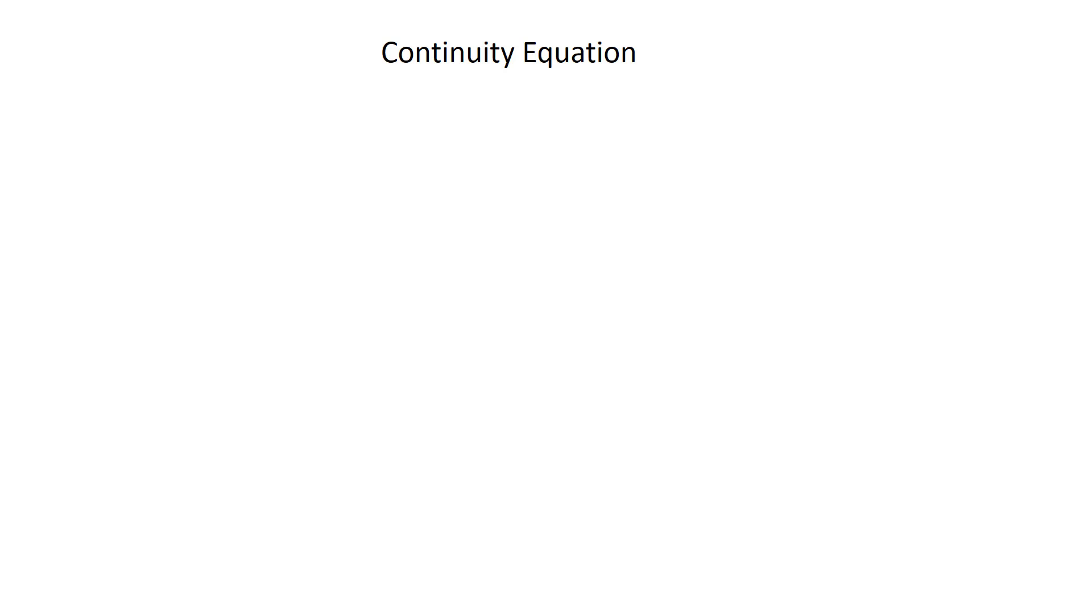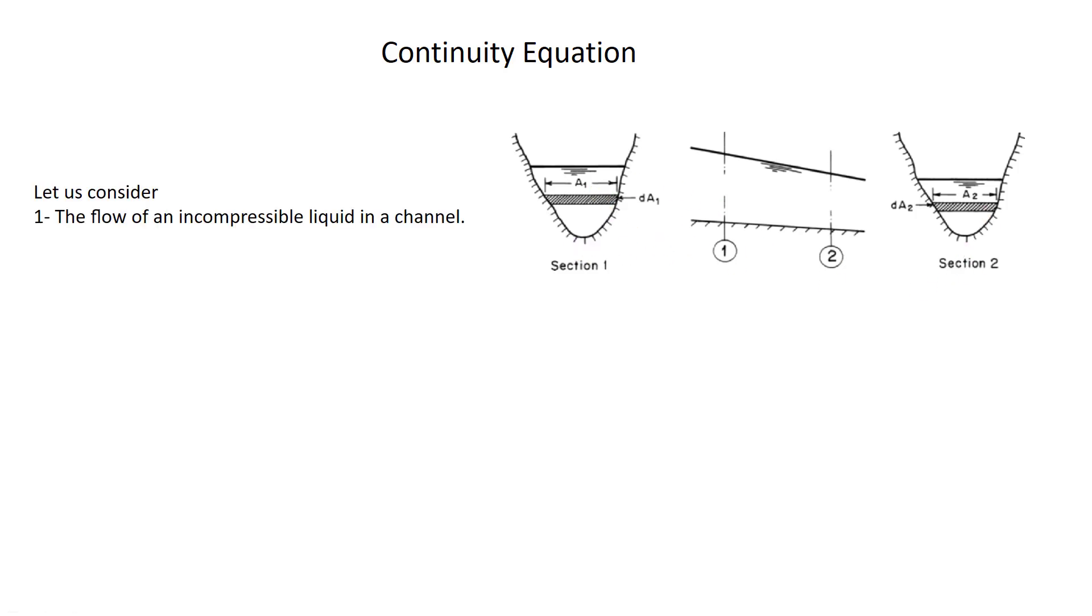Hello everyone, today I want to explain the continuity equation. Let's do it. First, we have this channel with two cross sections: section 1 and section 2. We consider the flow of an incompressible liquid in a channel with no inflow or outflow across the channel boundary.